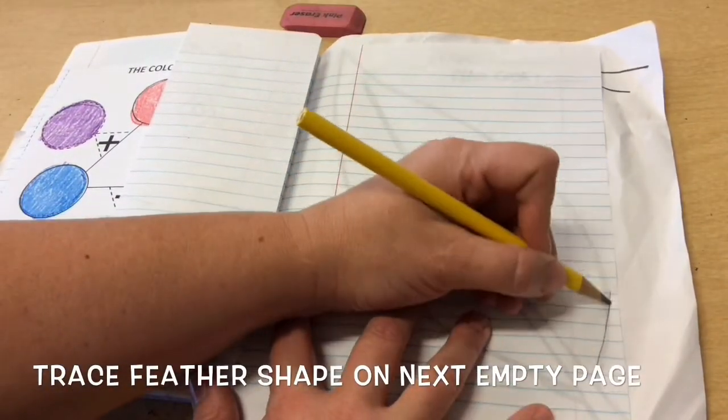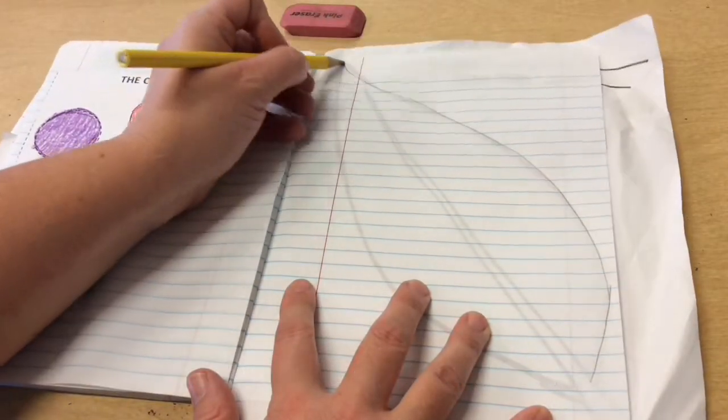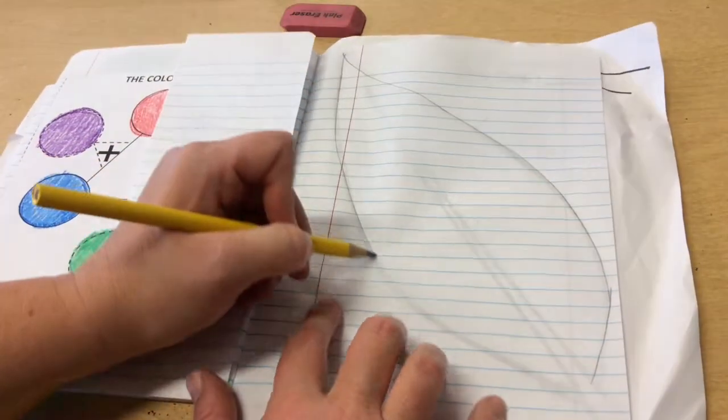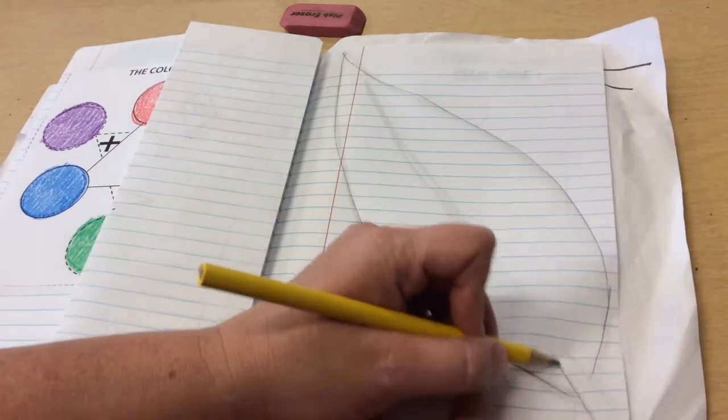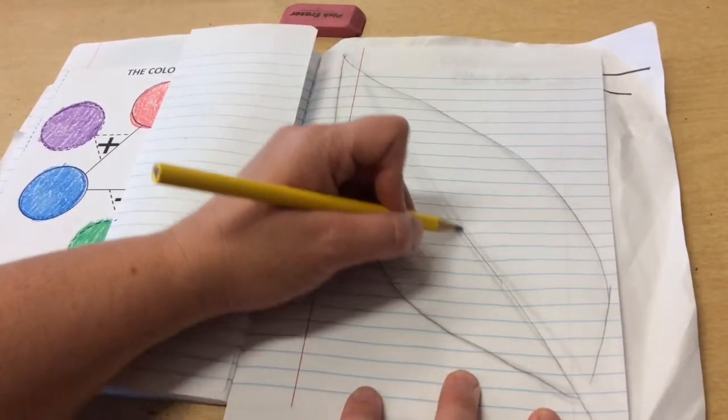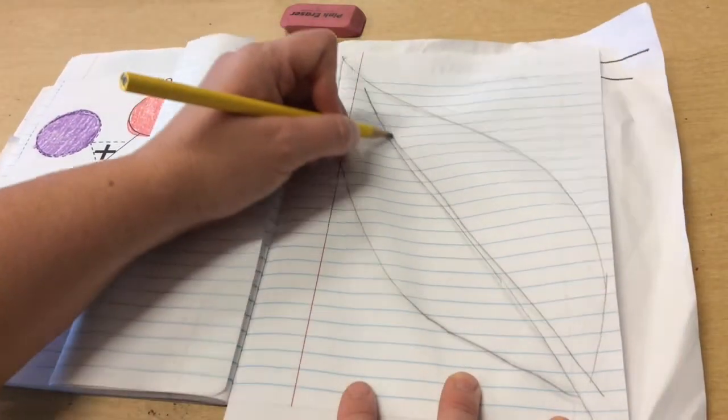And this is just going to be a rough sketch of what I would like to do on my feather. I'm going to include the center point because we want to make sure that we are practicing our letters as well.